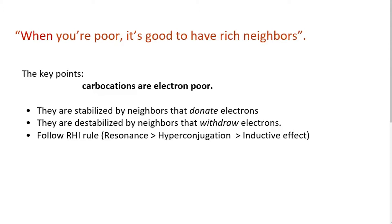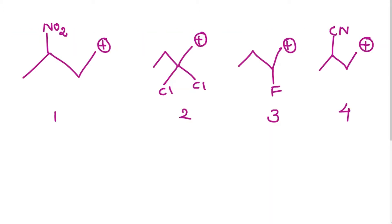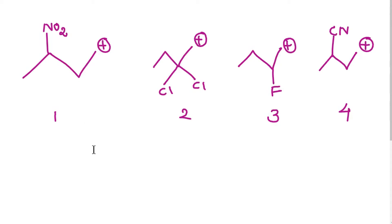Let's decide the stability order by taking a few examples. In this example, we recall the concept of inductive effect. Groups like NO2, Cl, F, and CN will withdraw electrons and make the carbocation unstable. The power of the inductive effect totally depends upon the distance of the group from the carbocation.